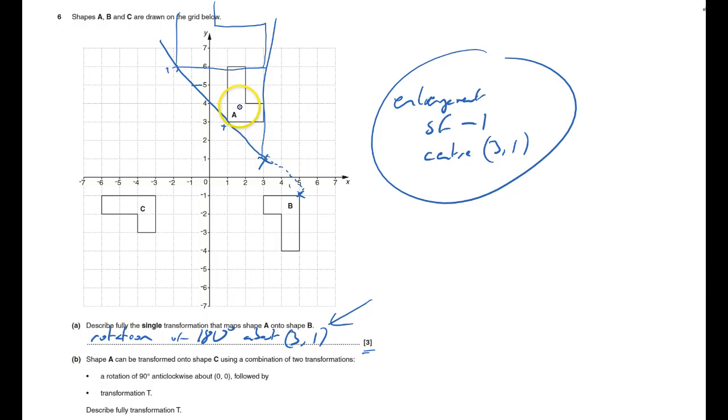Shape A goes to shape C. It's a 90-degree anti-clockwise rotation using tracing paper about the origin (0, 0). Put the tracing paper on here, trace A, put your pen on there, rotate it around, and it will go here. Then we have to work out the transformation to get to here.